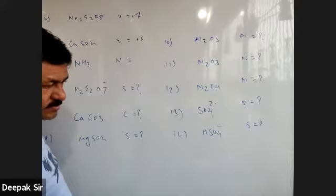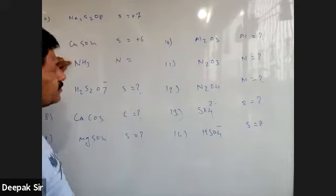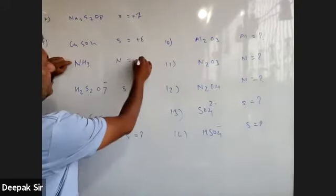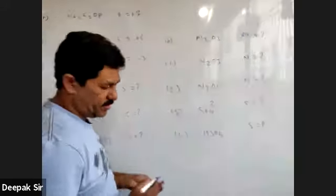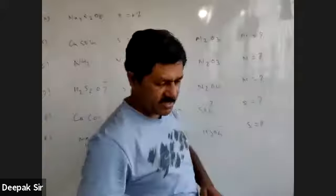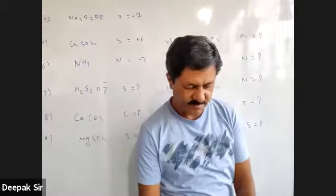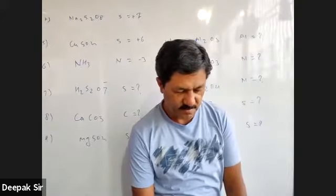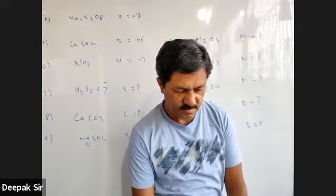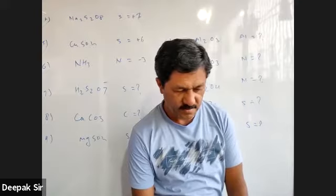Nitrogen's oxidation number is minus three. Very good. Next. There's a doubt about the seventh one — it's not coming clearly.